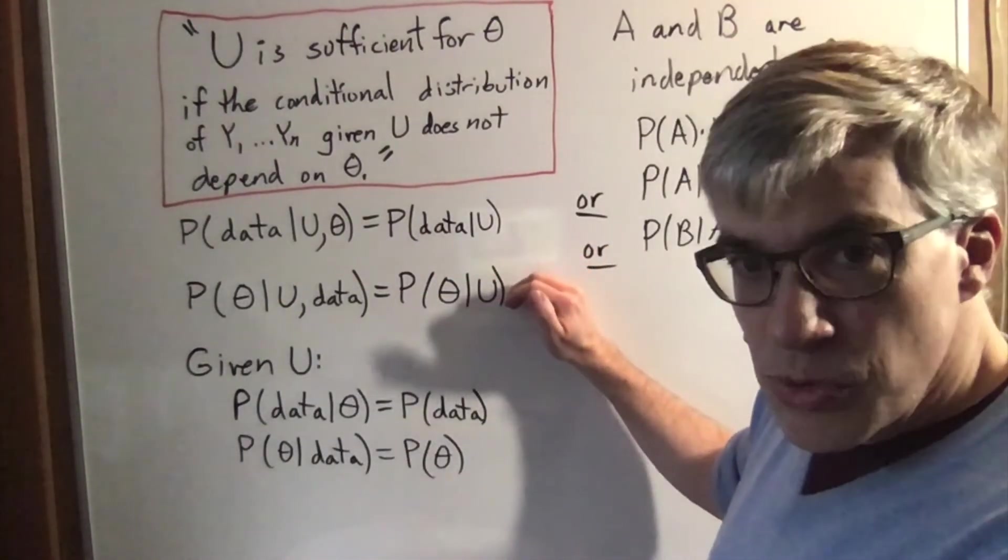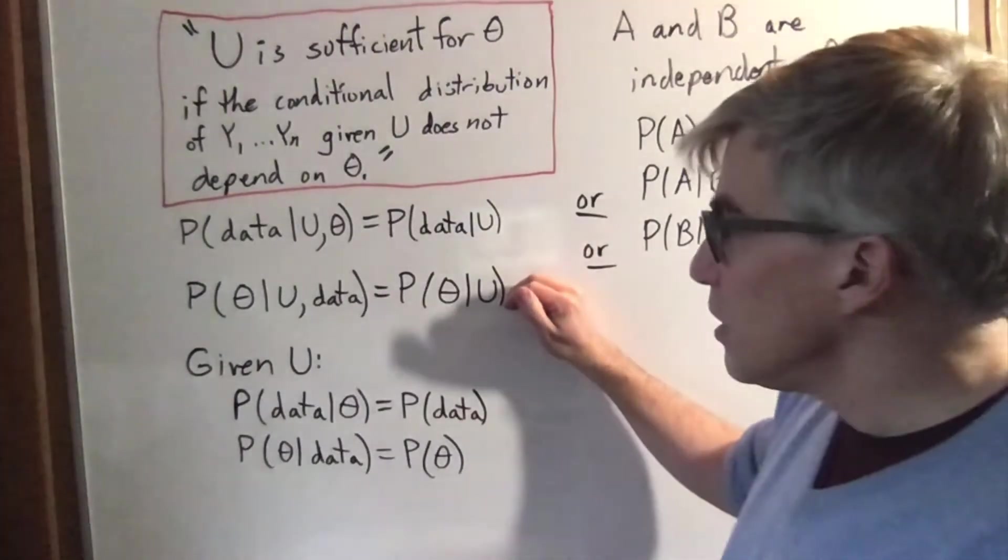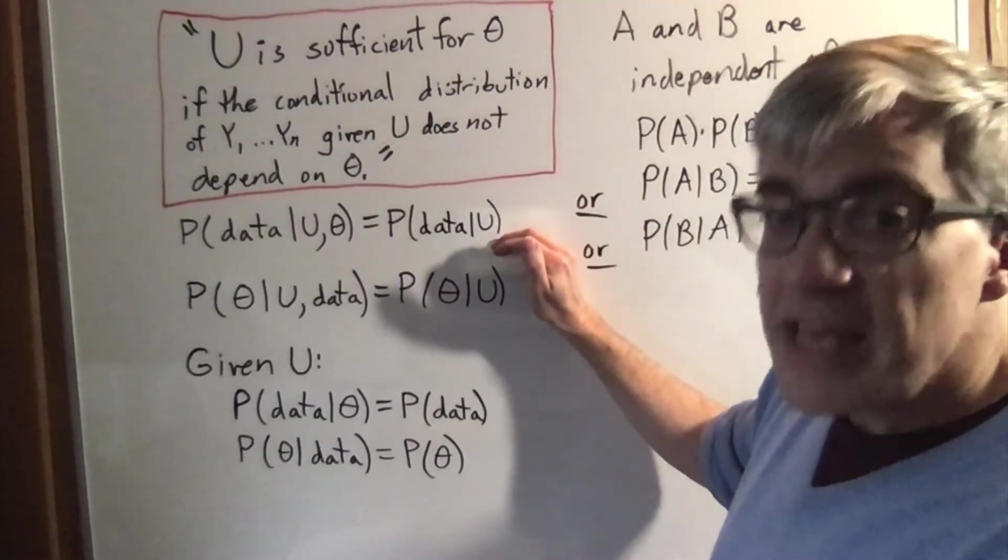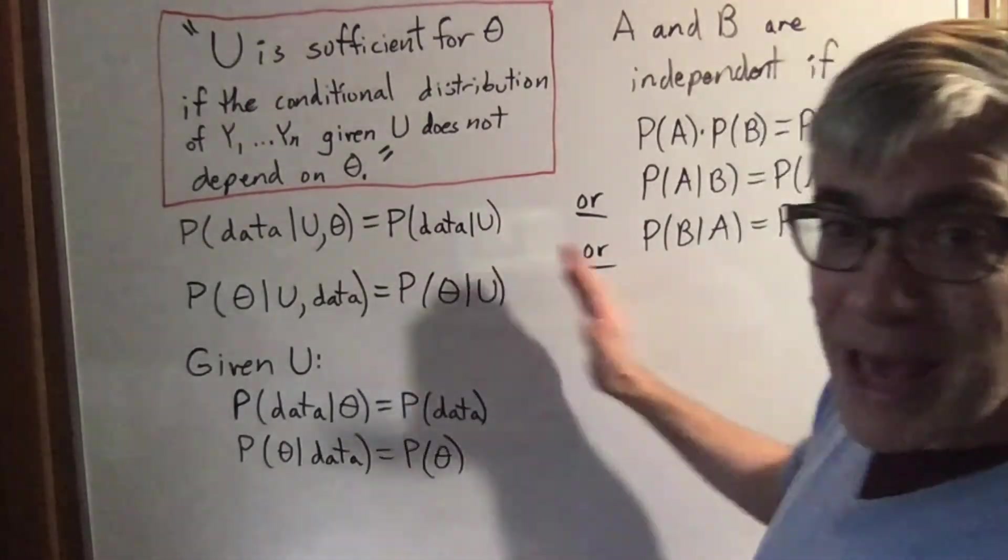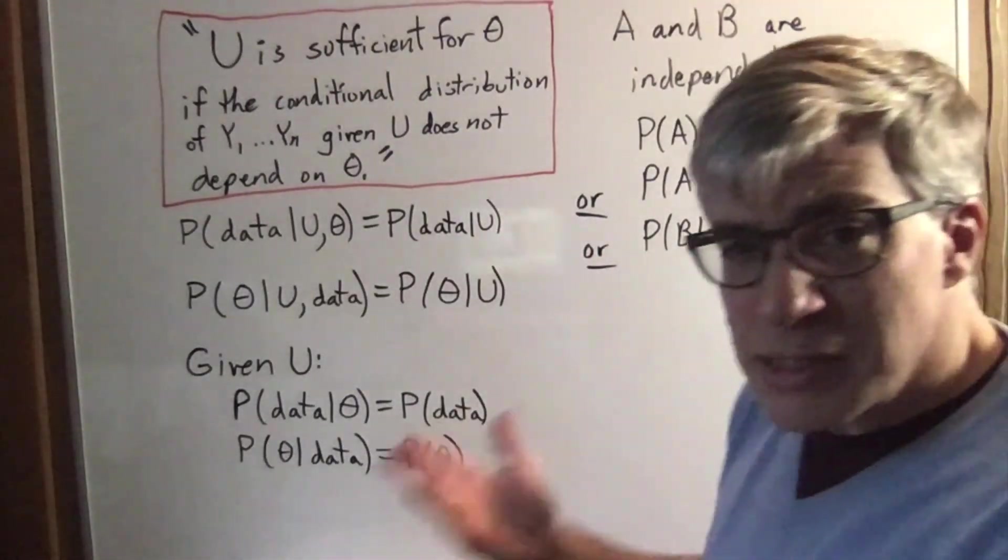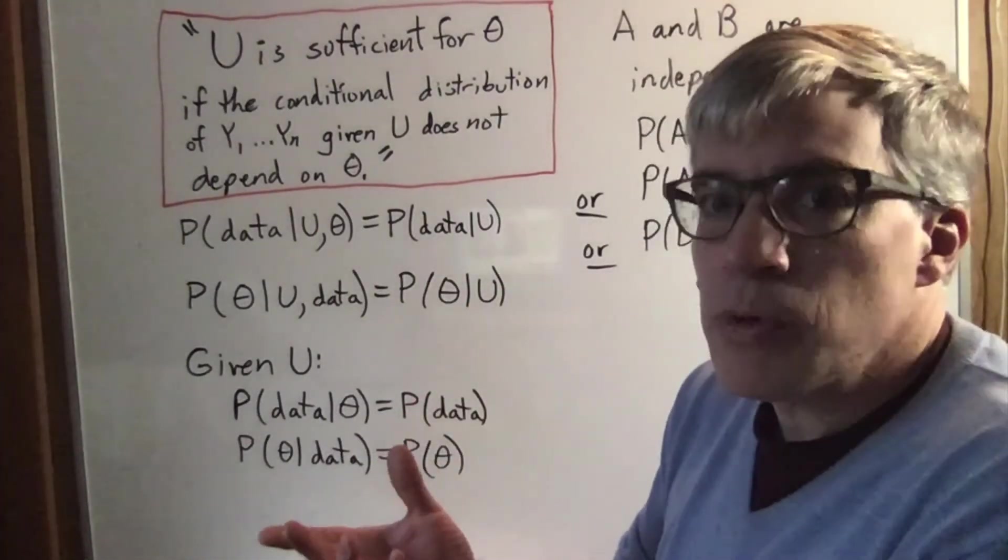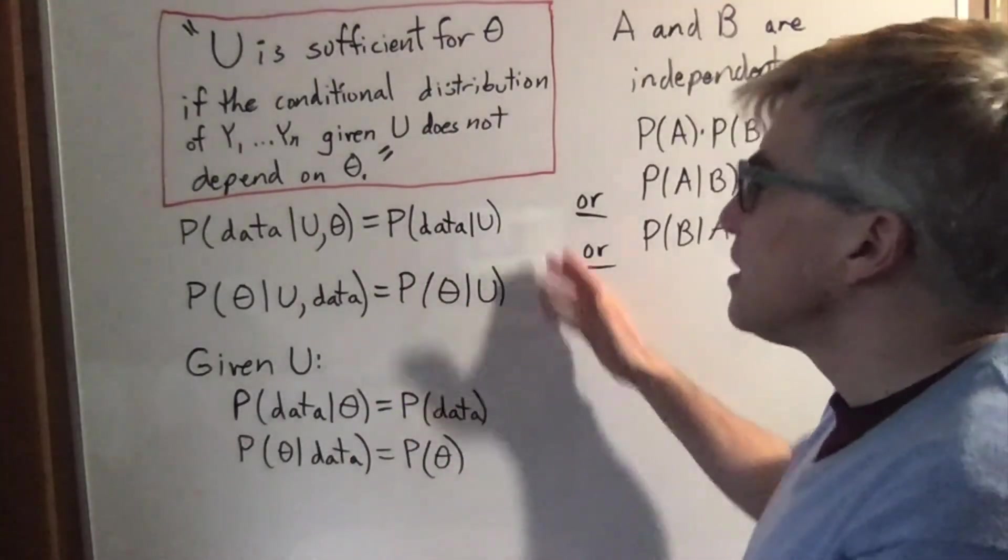That's what makes sense intuitively with the verbal description. But the definition they gave was this. It so happens that those two things are mathematically the same, but conceptually they're completely different. I have no idea why they pulled that switcheroo, but they did.